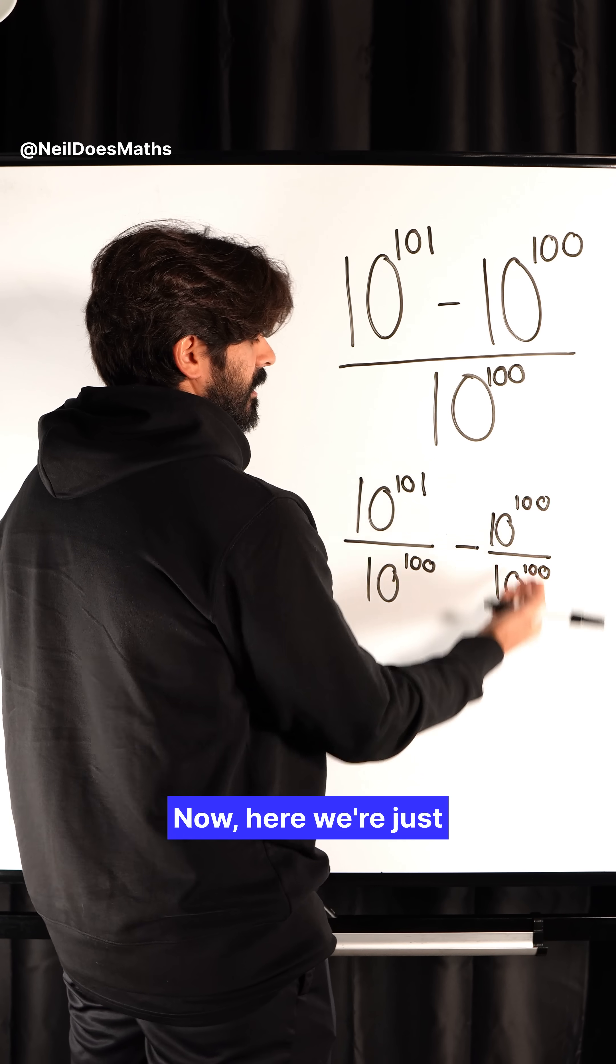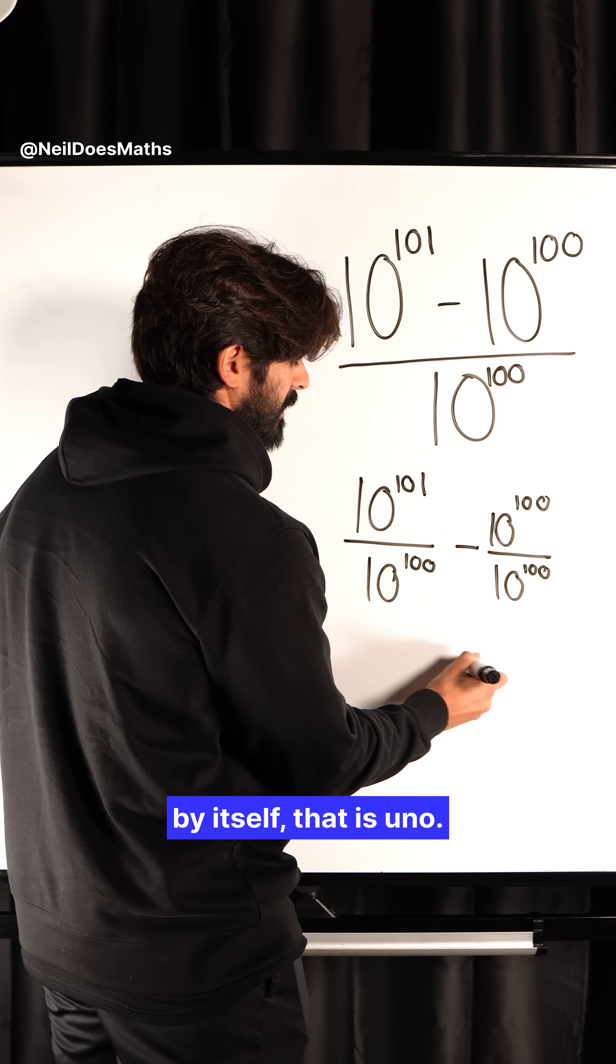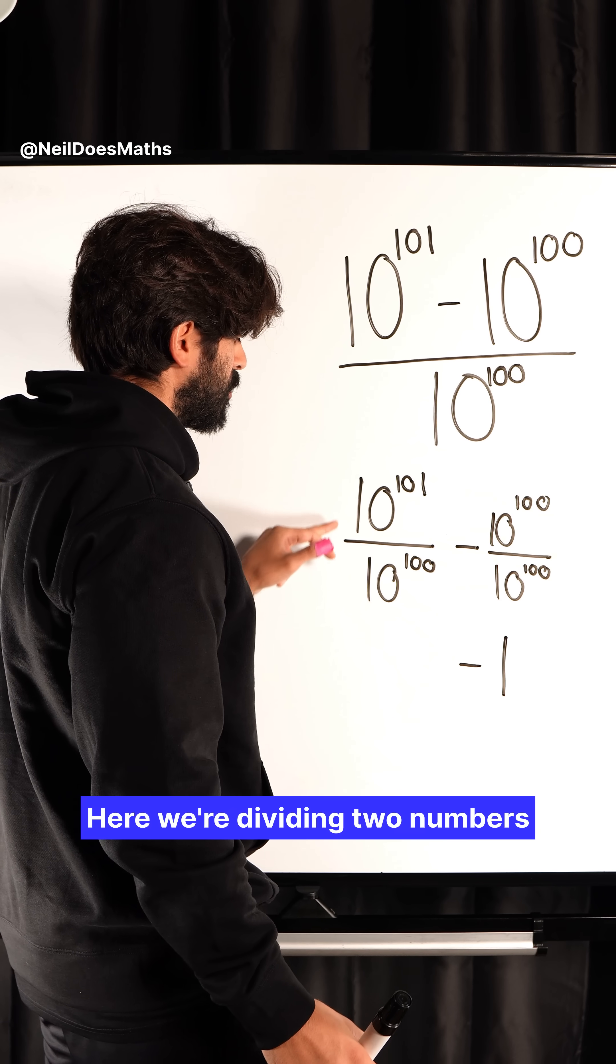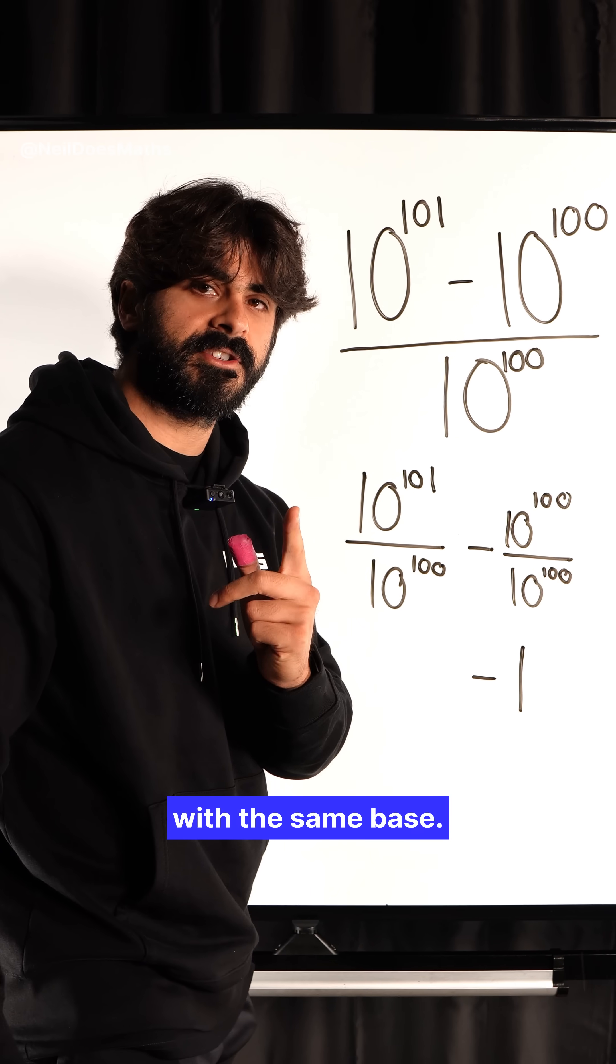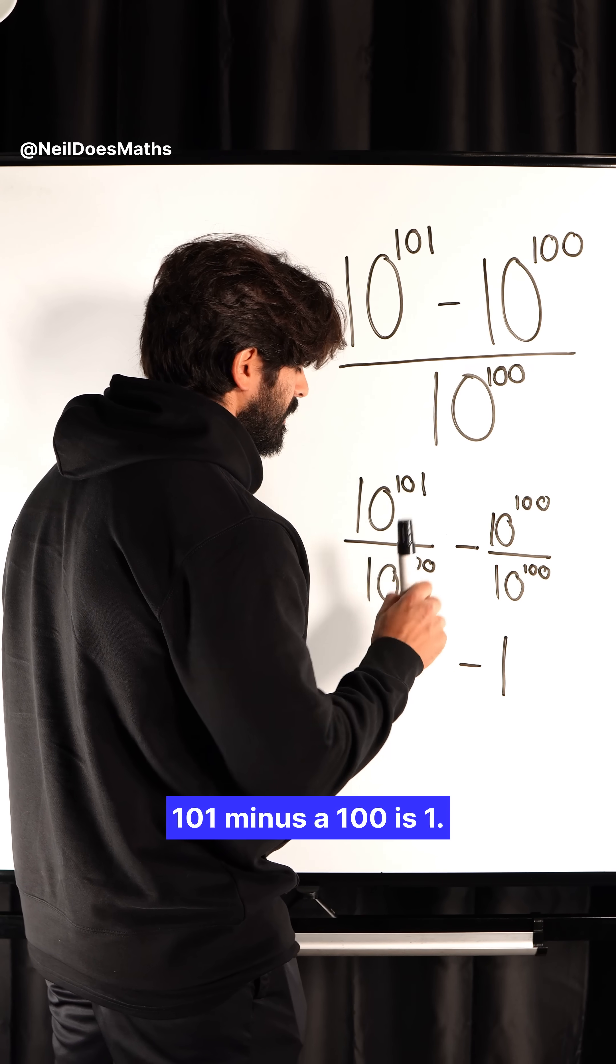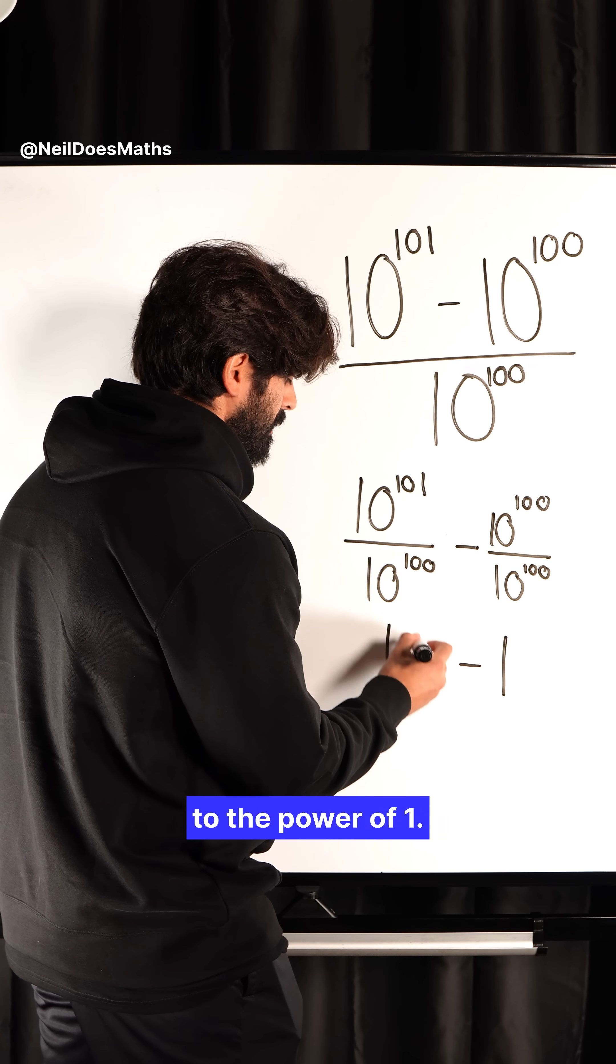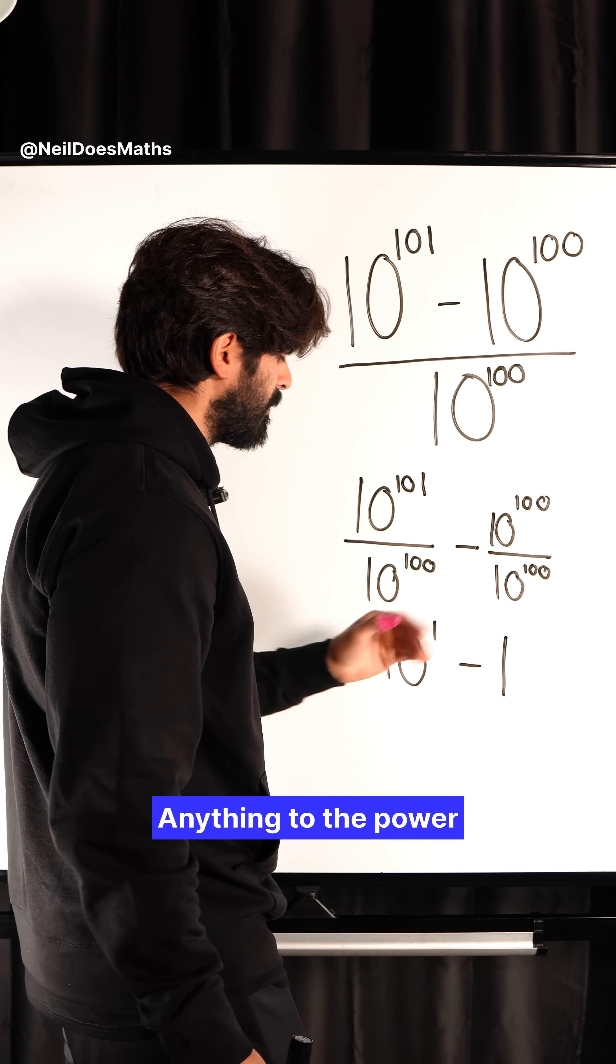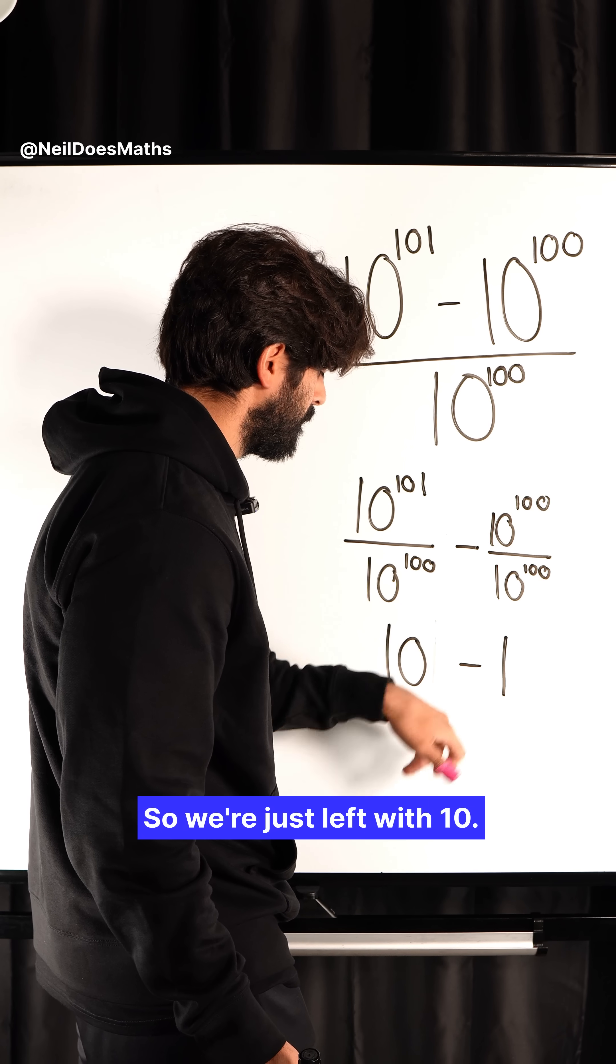Now, here we're just dividing a number by itself. That is 1. Here we're dividing two numbers with the same base. We subtract the powers. 101 minus 100 is 1, so we're left with 10 to the power of 1. Anything to the power of 1 is just itself, so we're just left with 10.